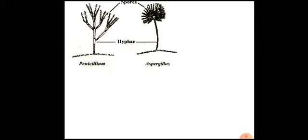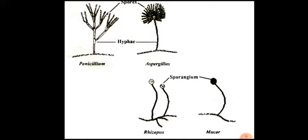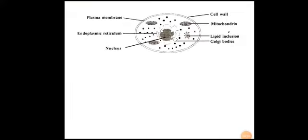Some pictures of fungi: Penicillium shows conidiophores on which spores are borne. The second picture is of Aspergillus, and then Rhizopus and Mucor. In Penicillium and Aspergillus, spores are produced outside on the stalk, whereas in Rhizopus and Mucor the spores are produced within a sac called sporangium. The diagram also shows the structure of a typical fungal cell with all eukaryotic cellular components.